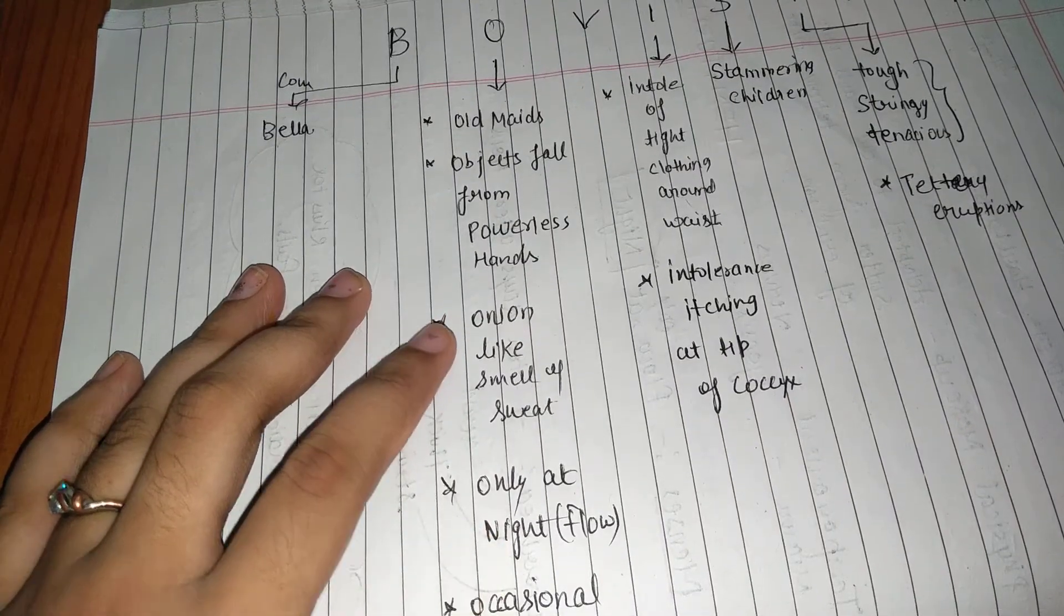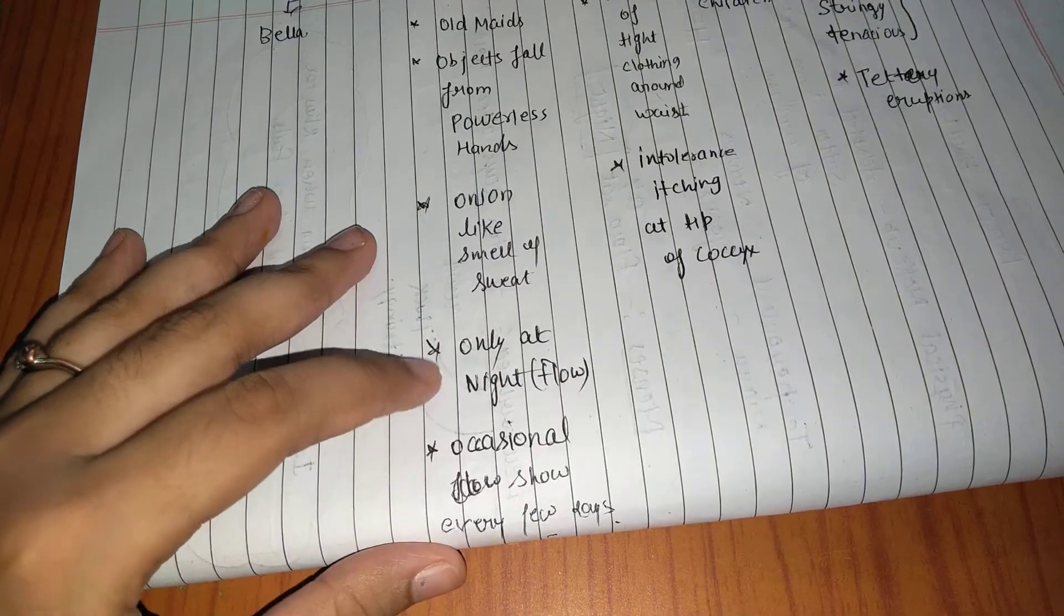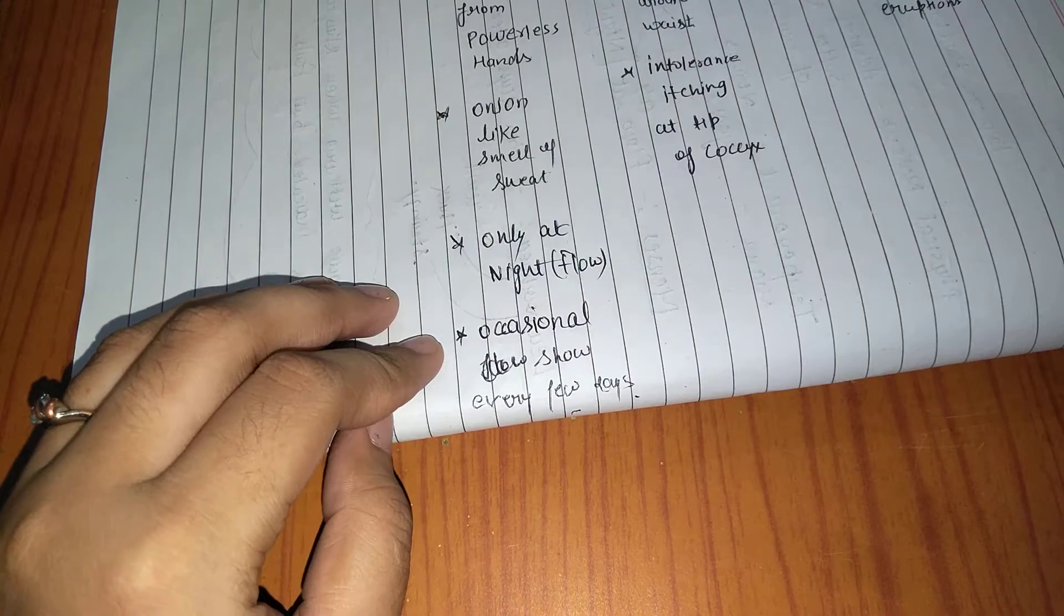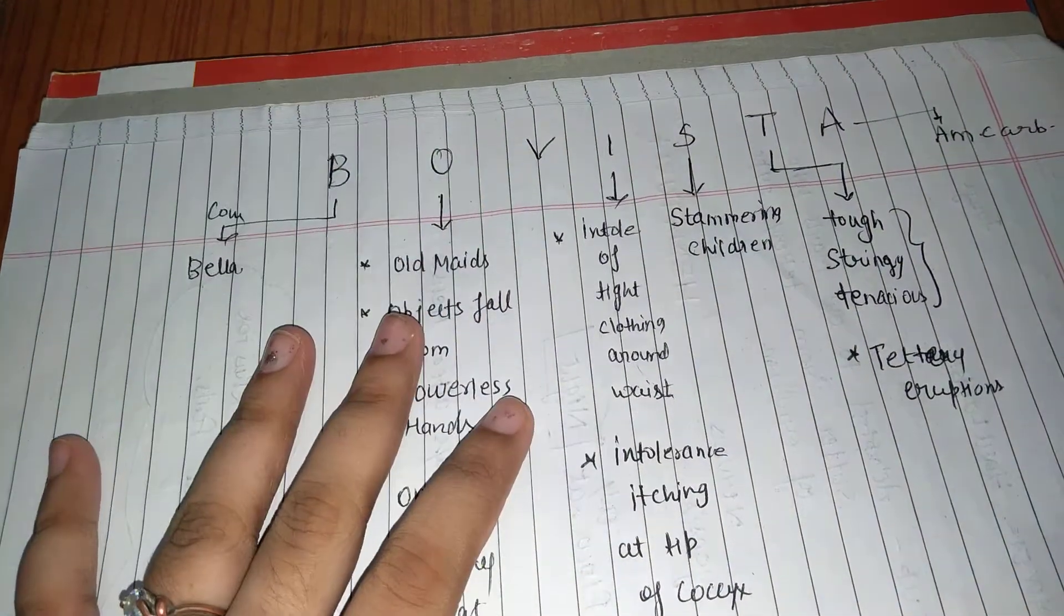Remains, why? Because weakness, puffiness, onion-like smell of sweat, only at night flow menses, and occasional show every few days after menses. These are important symptoms.